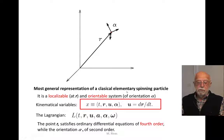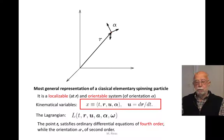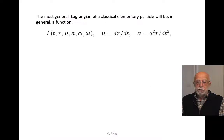Because of this dependence of the Lagrangian on the acceleration of the point R, point R satisfies fourth-order differential equations, while the orientation of the system satisfies the usual second-order Euler's equations for the rotation of bodies. This is the most general Lagrangian for a classical elementary particle.